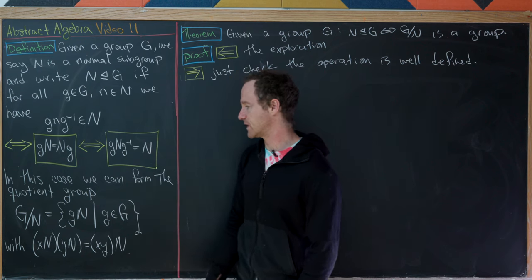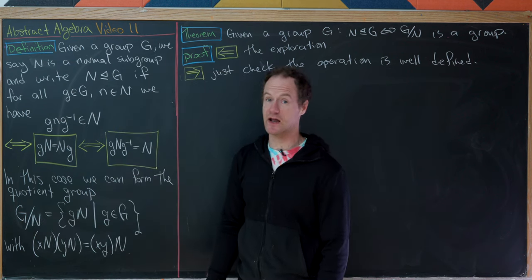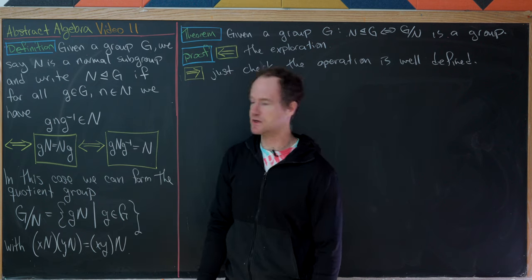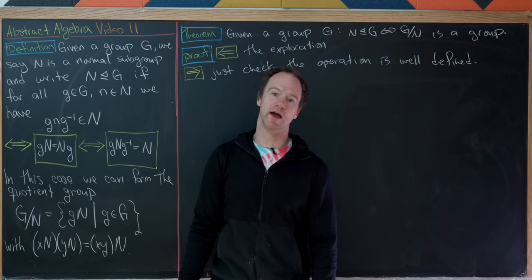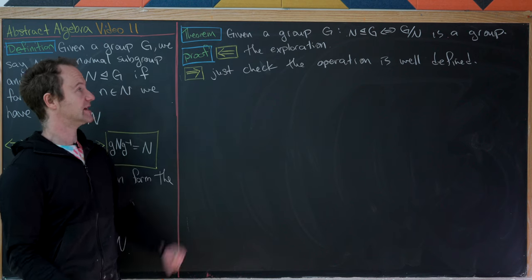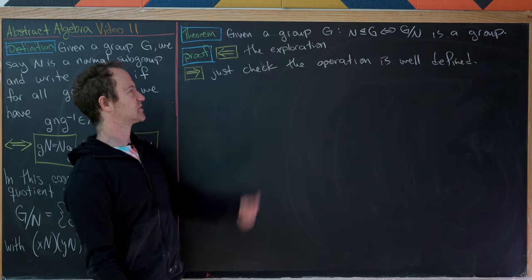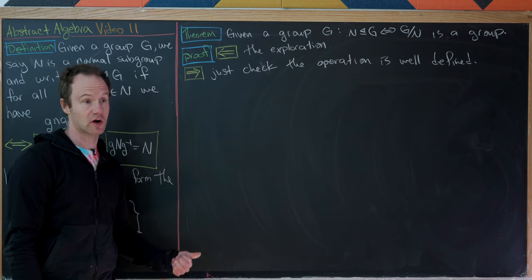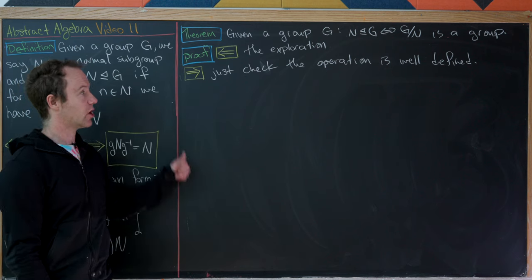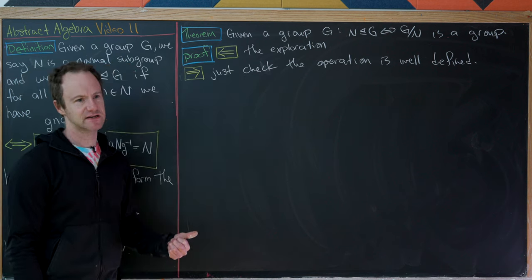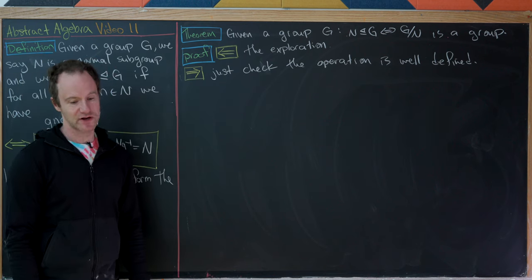In this case, we can form something called the quotient group, written G/N or G mod N — the set of all left cosets with the operation XN · YN = XYN. Here's a nice theorem tying this all together: if we've got a group G, then N is a normal subgroup if and only if G mod N itself is a group. The reverse direction is exactly the exploration we just did on the previous chalkboard. For the forward direction, we need to check that the operation is well-defined, since we already automatically have identity, inverses, and associativity.